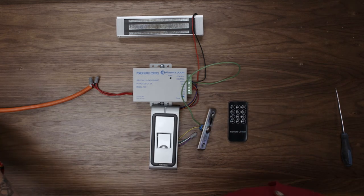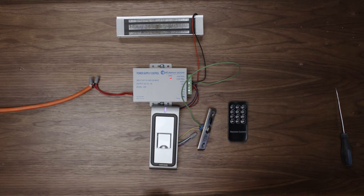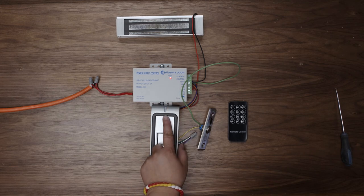Now turn on the power. The light on the fingerprint scanner should flash red and the magnet should lock. We are ready to program the fingerprint scanner.